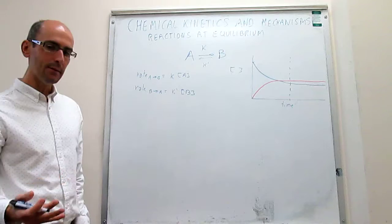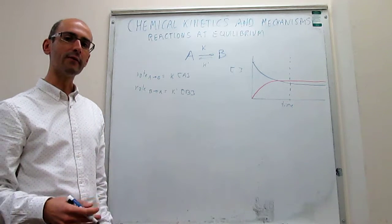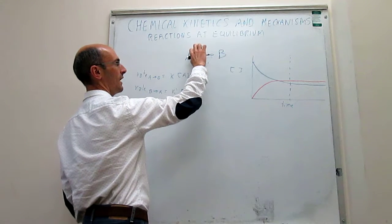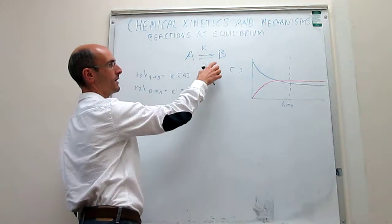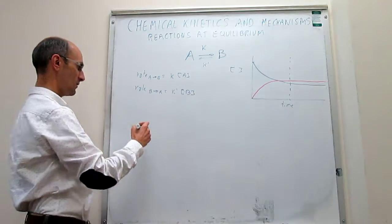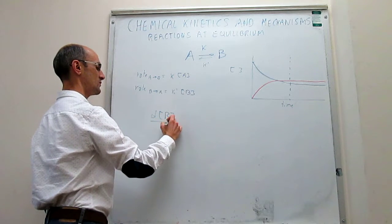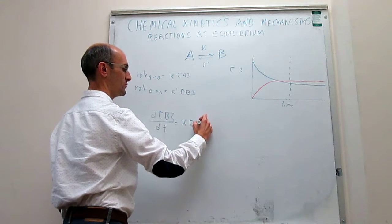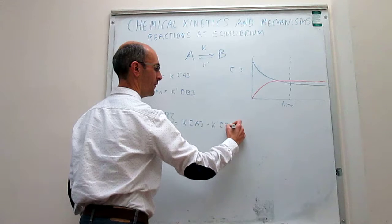So this is what we have. At any point in the reaction — at the start or at the end — we can define the rate of product formation. The rate of product formation is simply the rate of the reactions forming the product minus the rate of the reactions actually removing the product from the reaction mixture. The rate of product formation, which is how the concentration of B changes with time, is the rate of the reaction producing B minus the rate of the reaction removing B from solution.